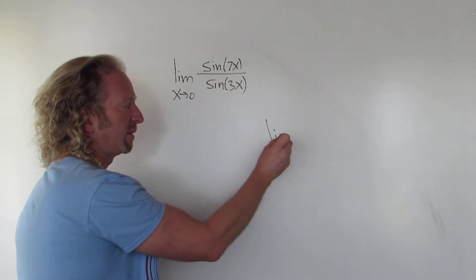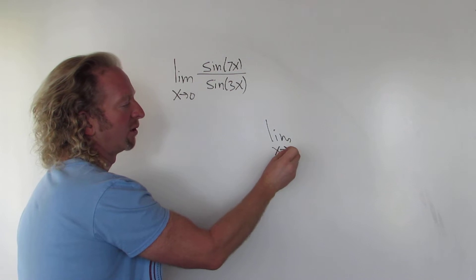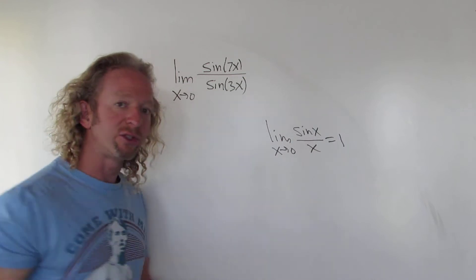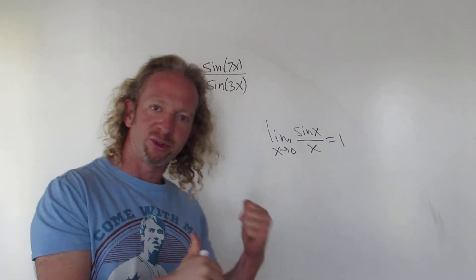It's this one. We take the limit as x approaches 0 of sine x over x. This is equal to 1. So this is a super useful limit that we'll use to do this problem.